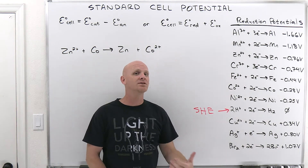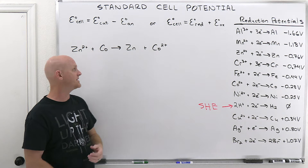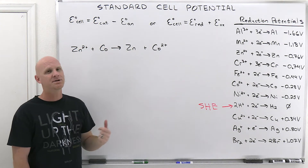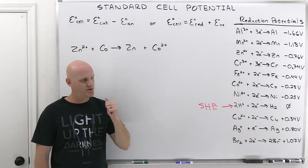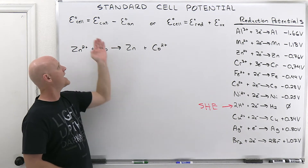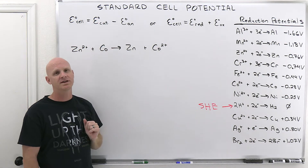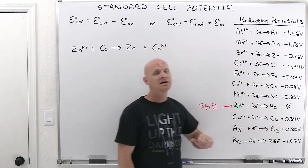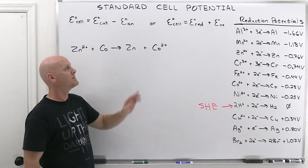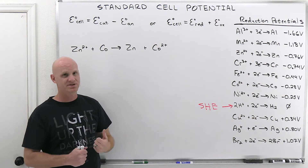We use these reduction potentials to calculate standard cell potentials. The most common formula is E_cell = cathode minus anode. Reduction happens at the cathode and oxidation at the anode, but in the cathode minus anode formula, you use the reduction potential value for both cathode and anode — straight from the table without changing any signs. By subtracting the anode's reduction potential, the math changes the sign for you automatically.